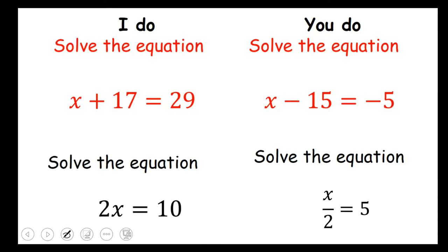Okay the first question is x plus 17 equals 29. You need to work out the value of x. What is x? How you do that is you need to get x on its own. So we need to move this plus 17 to the other side. So what we do is we do the inverse of plus 17 to both sides to get rid of this 17.